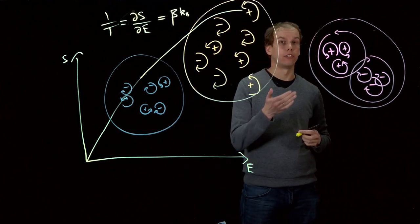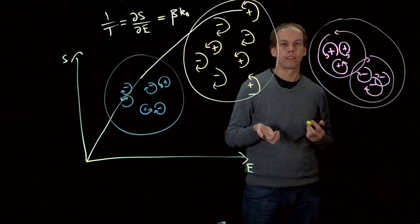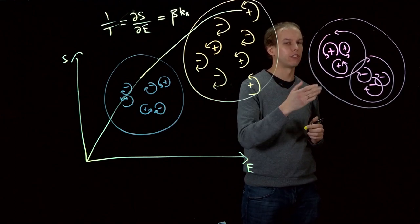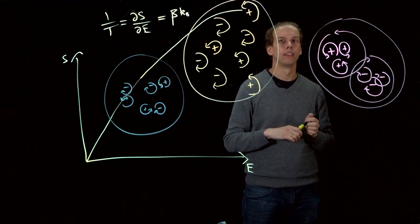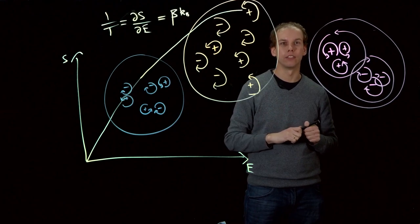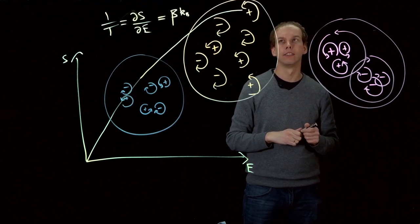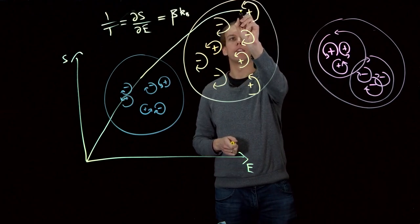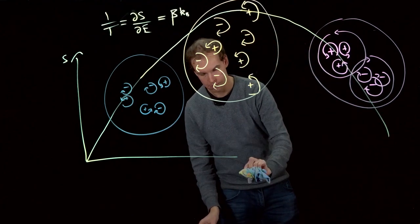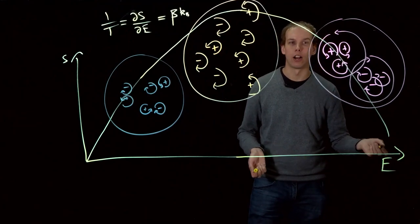If we consider the entropy of this case, once again, this is a fairly ordered system because the vortices of the same sign are grouped together. So it's not as random as these other cases, yet it has a higher energy. And so the entropy has gone down while our energy has gone up.